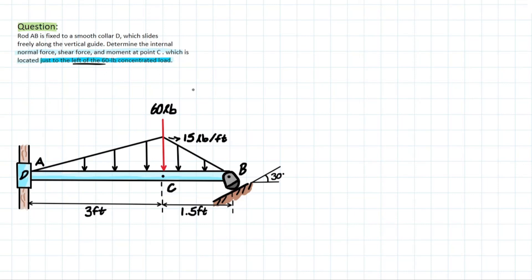And it also covers the concept of taking a cut of our member, but looking to the left or the right of a force that's applied at the point. So that will make a lot more sense once we get into the problem, but let's just read through and see what we're dealing with. So rod AB is fixed to a smooth collar D, which slides freely along the vertical guide. Determine the internal normal force, shear force, and moment at point C, which is located just to the left of the 60-pound concentrated load.